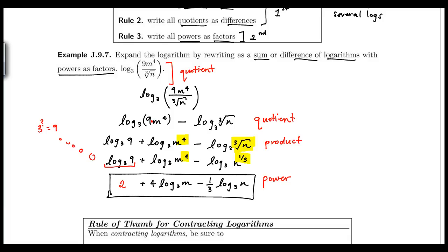The answer looks like a tree — we started off with one log, and using the three properties we expanded and got a sum and difference of logs. Make sure all exponents are written in front of the log as factors, that you don't have a product in your values, and that you simplify any logs you can simplify. Then you know you're done and you've expanded your logarithm.